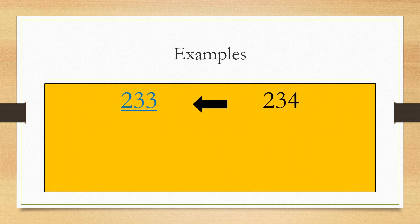Let us see some examples. Look at the numbers. To find out the before number of 234, we have to count backward and the very first number we get is 233. So the number before 234 is 233.